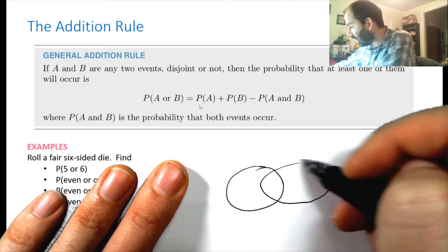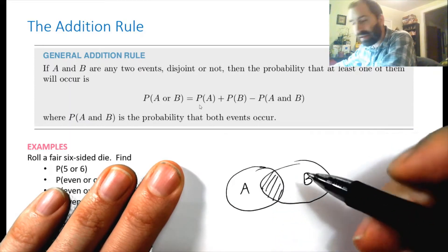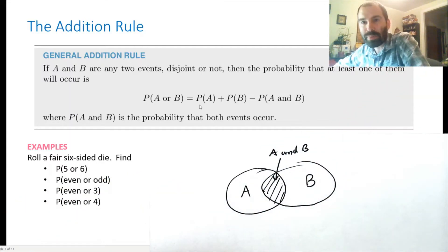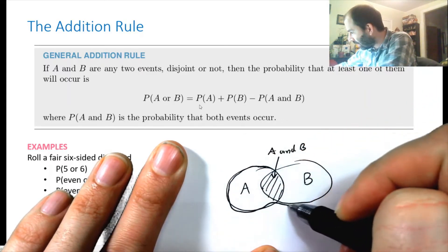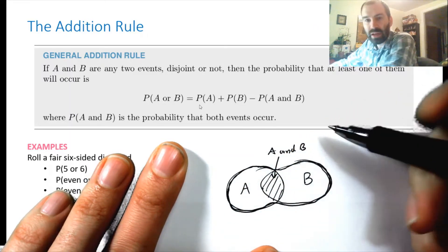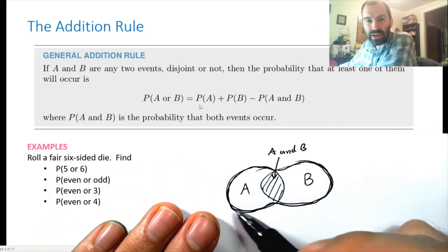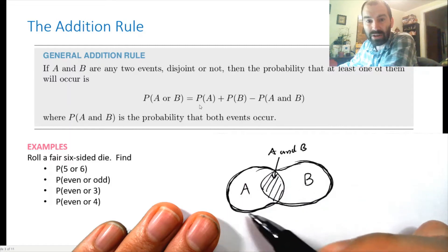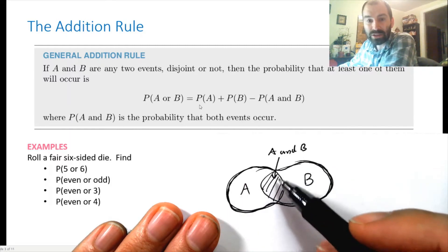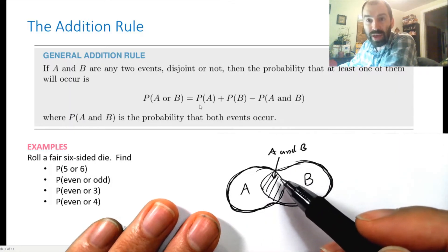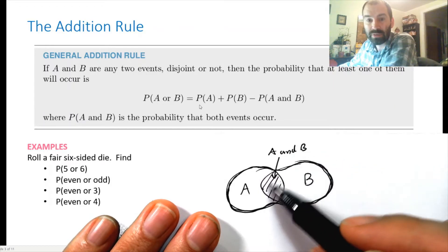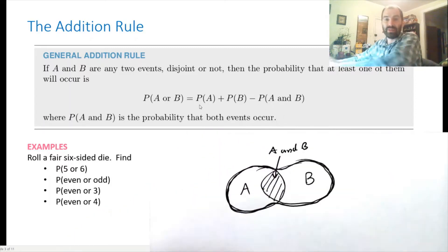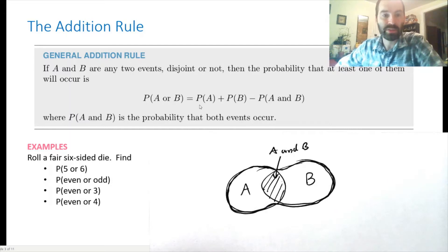To illustrate with a Venn diagram: event A is one circle, event B is another, and their intersection is A and B — things in both. To find the probability of A or B, we measure the entire peanut-shaped region. If we just add P(A) and P(B), we've counted the intersection twice — once for A and once for B — so we subtract P(A and B) once to correct that.